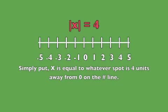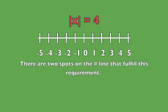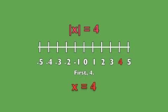Simply put, x is equal to whatever spot is four units away from zero on the number line. There are two spots on the number line that fulfill this requirement. The first one would be four — four is four units away from the origin zero on the number line: one, two, three, four. So x could be equal to four.